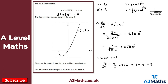Now we have the gradient and the point P, so we use the equation y minus y₁ equals m times (x minus x₁), where x₁ and y₁ are the coordinates of P.